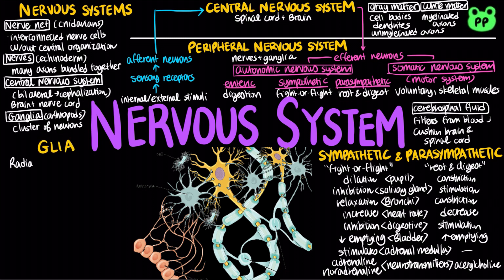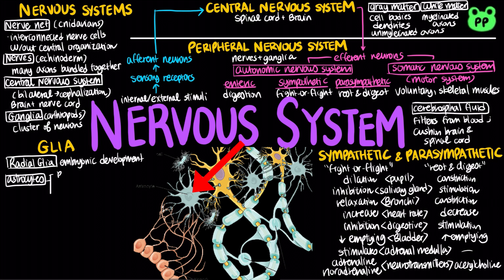Radial glia play a role in embryonic development of the nervous system. Astrocytes induce the formation of a blood-brain barrier that regulates the chemical environment of the central nervous system. They also regulate extracellular ions and neurotransmitters, as well as provide structural support for neurons.